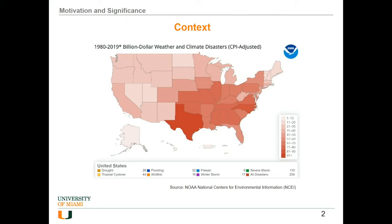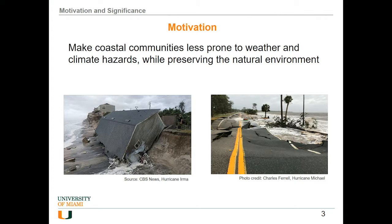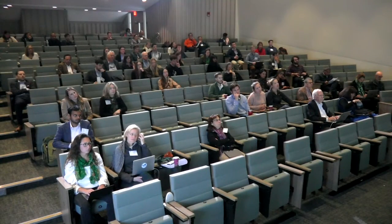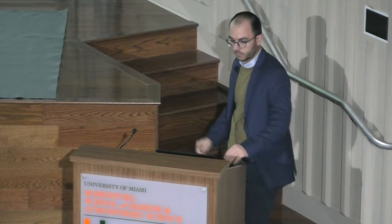So what is our goal? Our goal is simple: we want to make our coastal communities less prone to weather and climate disasters. We don't want to see those effects, such as Hurricane Irma — the photo on the left — or the effect of Hurricane Michael on the transportation network shown on the right. But we want to do it in a smart way, thinking also about sustainability and the environment, to preserve and enhance the natural environment.